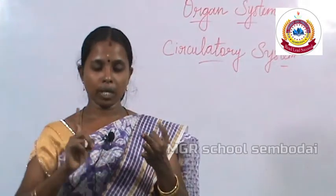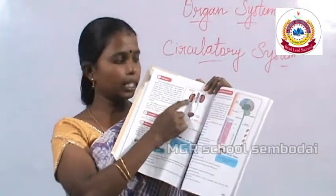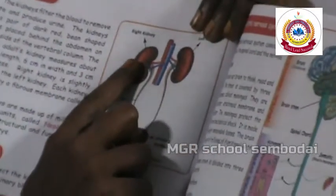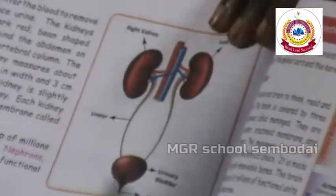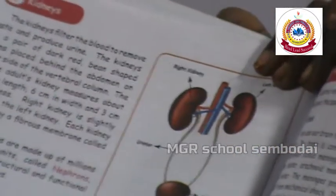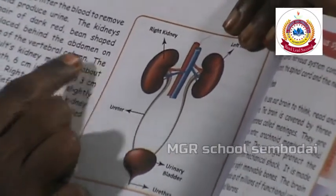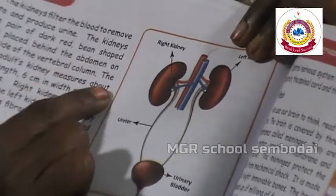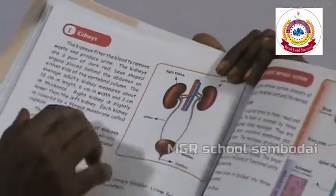The kidneys filter the blood, remove waste, and produce urine. The kidneys are a pair of dark red, bean-shaped organs placed behind the abdomen on either side of the vertebral column. The average adult kidney measures about 12 cm in length, 6 cm in width, and 3 cm in thickness.